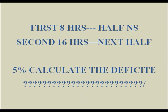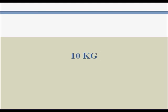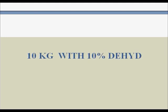I will give you a good, simple example. Take a 10 kg baby with 10% dehydration. You have to give fluids — how do you calculate? First, since he has 10% dehydration, he is not in severe dehydration, so we don't give a push. Come to the two terms: maintenance and deficit.